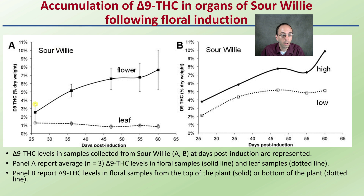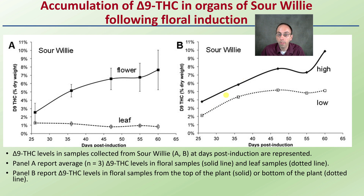Panel A shows the average of three plants for Delta-9 THC levels — floral samples is the solid line, and leaf samples is the dotted line. Panel B shows the Delta-9 THC in floral samples from the top of the plant, which is the solid line, and the bottom of the plant, which is the dotted line.